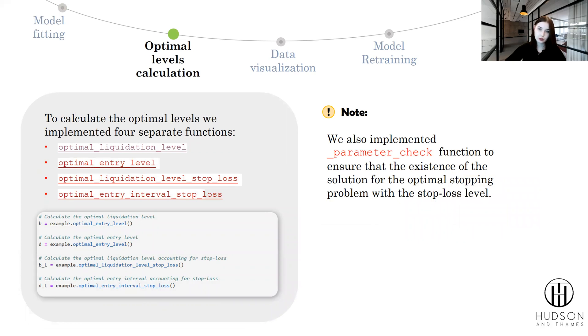Also, there is a parameter check function implemented inside the model that checks how well the parameters fit. The parameters provided by the user must fit into finding the solution of the optimal stopping problem with the stop loss level. If your parameters are not suitable for finding the solution, the model will give you a warning with suggestion to change the parameters to more fitting ones. However, implementing those type of functions, we get the results that you can see on the screen right now.